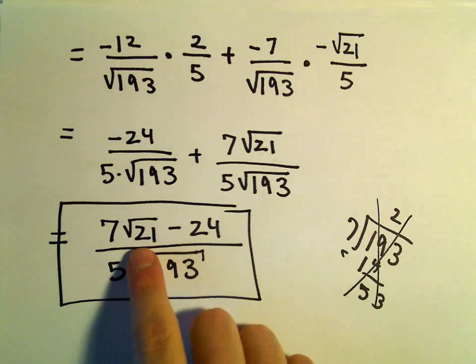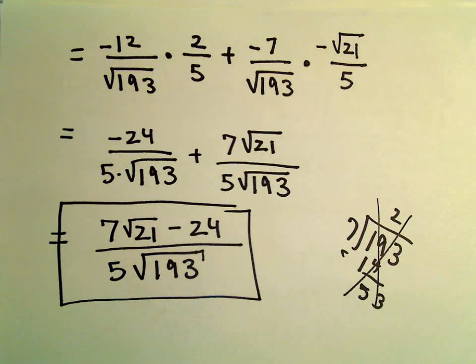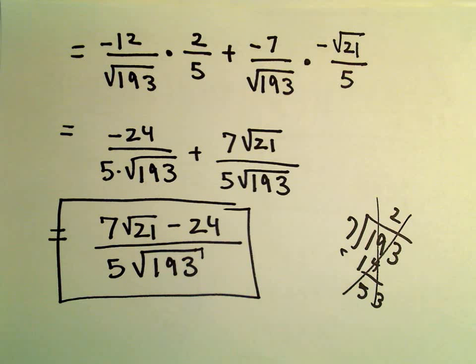You could make a little factor tree for 193 just to reduce it down, or approximate the square root of 21, plug it into a calculator, same thing with the square root of 193, and you'll have your solution.